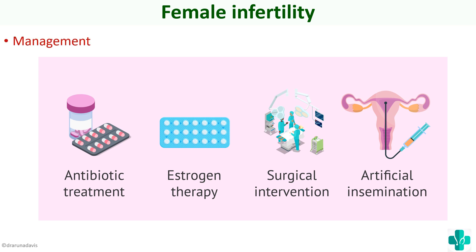In general, management of female infertility includes antibiotic treatment if the problem is infection, estrogen or progesterone hormonal therapy to support pregnancy, and surgical intervention for polyps or fibroids to make implantation possible. If the problem is vaginismus or difficulty in penetration, options include artificial insemination and in vitro fertilization. That covers the major causes, investigations, and principles of management of female infertility.